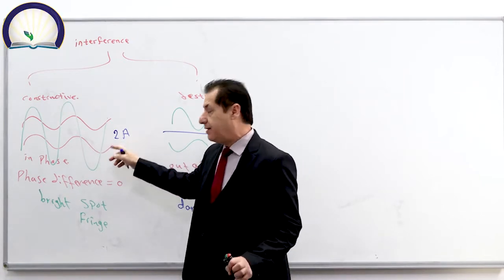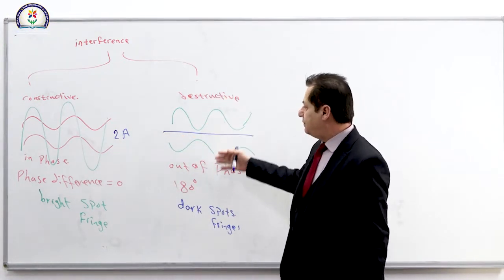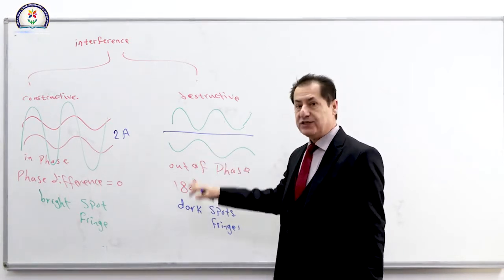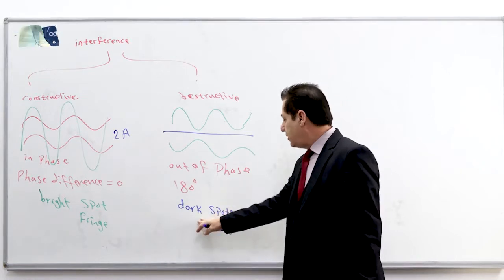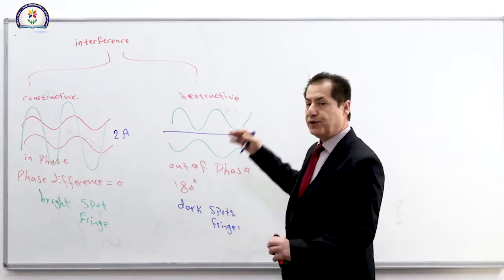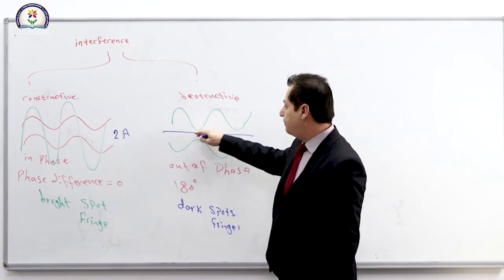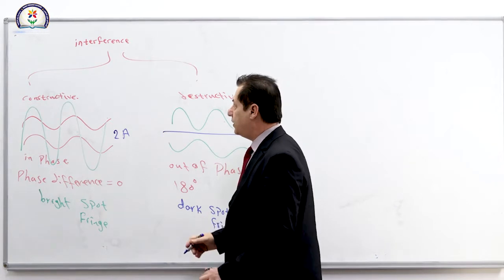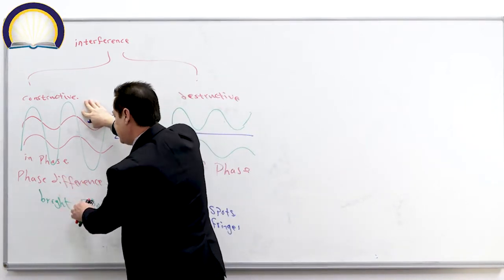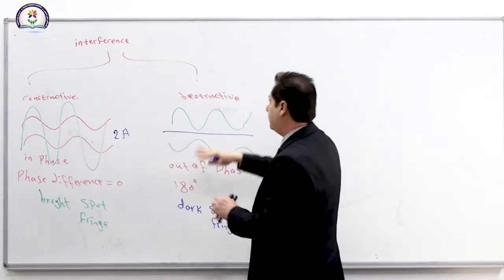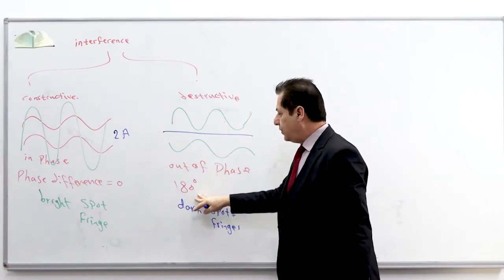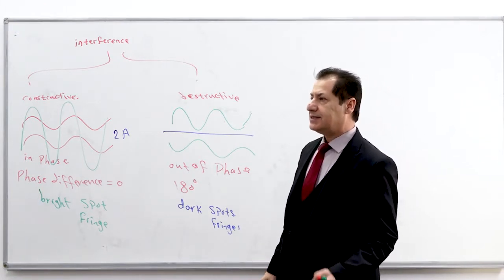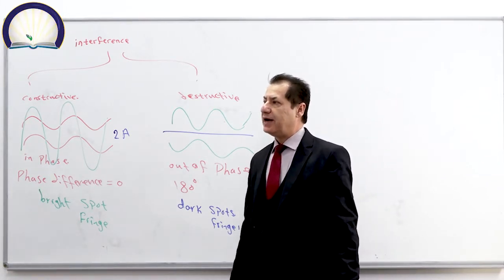For destructive interference, the two waves are out of phase — the phase difference is 180 degrees — so dark spots or fringes appear. The resultant wave has an amplitude of zero. So constructive gives in-phase bright fringes; destructive gives out-of-phase, 180-degree dark fringes.